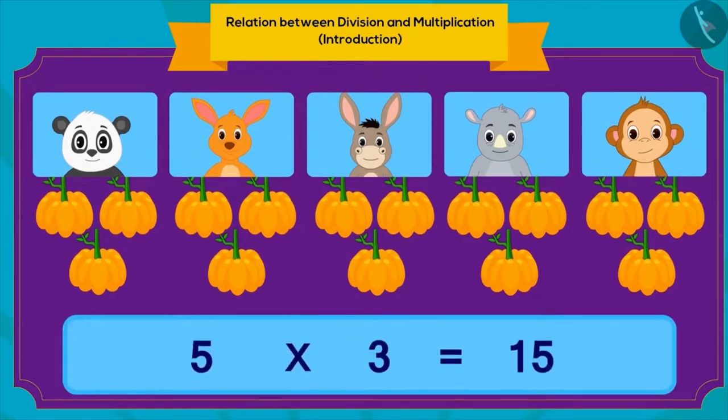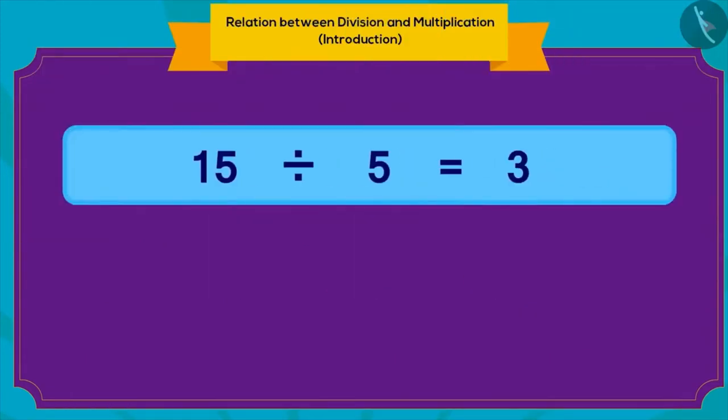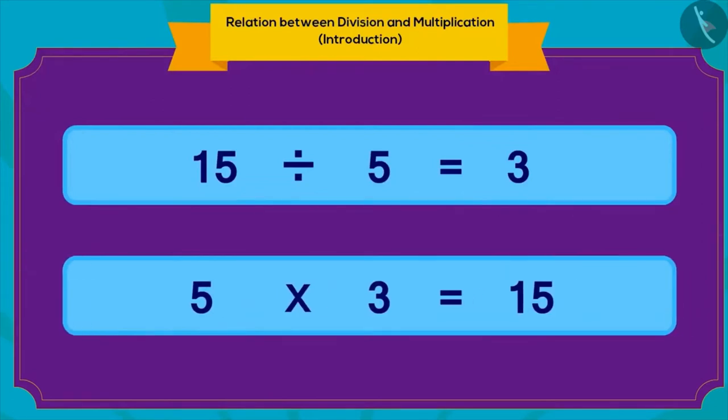How else can we write this? Absolutely correct! We can write it like this by using multiplication. Five multiplied by three is 15 pumpkins. Children, we can write any division in the form of multiplication.